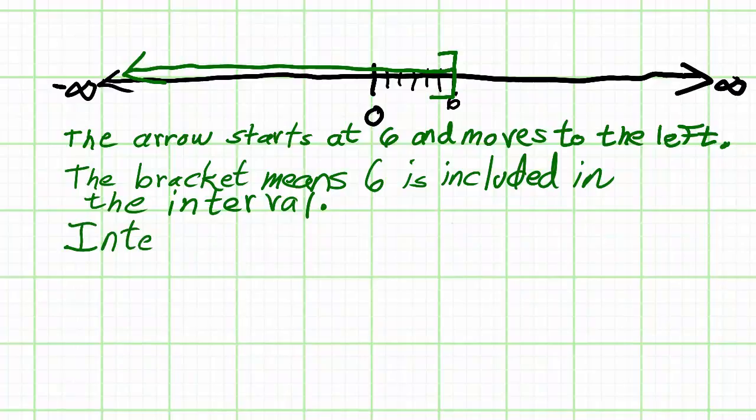So, what we're going to write is a parenthesis, and then negative infinity, and then a comma, and then 6, and then a bracket.